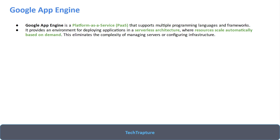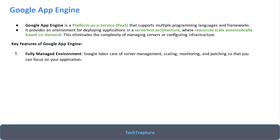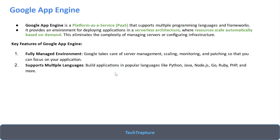Google App Engine is the best service for web applications or mobile application APIs. It is a fully managed environment — Google takes care of server management, scaling, monitoring, patching, and all other operational tasks. If you are using servers for application deployment yourself, you have to manage your server, network, manual scaling, monitoring, alerting, and patching. With App Engine, you just deploy your code and the rest is taken care of by Google.